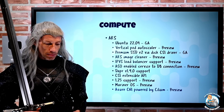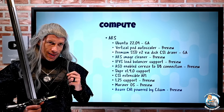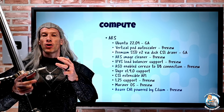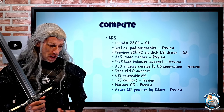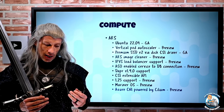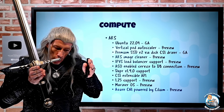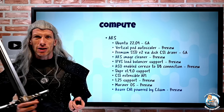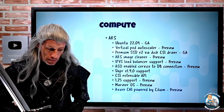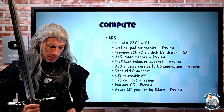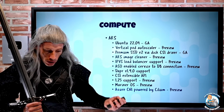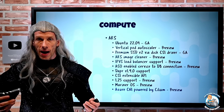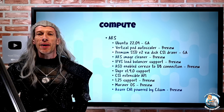Azure CNI powered by Cilium is in preview. Cilium is an open source eBPF data plane for clusters running the Azure CNI — the Container Network Interface — and I can use it on both the virtual network and overlay mode. eBPF is the extended Berkeley packet filter, enabling insertion of sandboxed programs directly into the Linux kernel for enhanced performance and processing capabilities. With this Cilium-powered CNI, I get basic networking, pod networking, network policies, better observability, support for larger clusters with higher performance, and higher service load balancing.